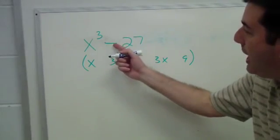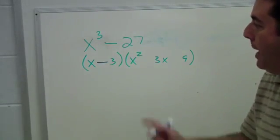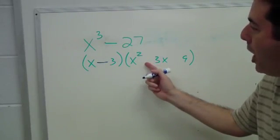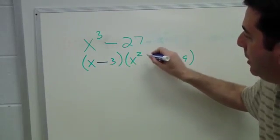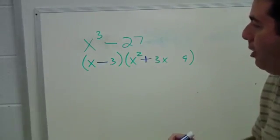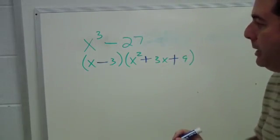The first sign is the same as the problem. Here in the middle, I want opposite of whatever we put there. Since I have a negative here, let's put a positive there. Back on the back is always positive.